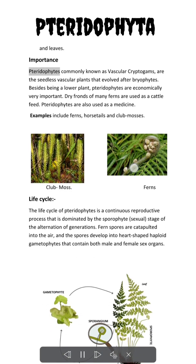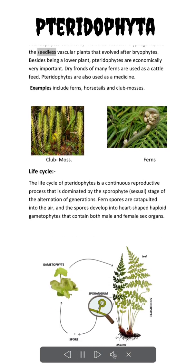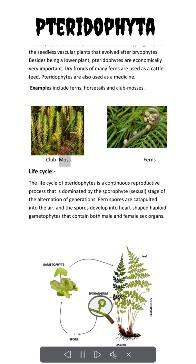Importance: Pteridophytes, commonly known as vascular cryptogams, are the seedless vascular plants that evolved after bryophytes. Besides being a lower plant, pteridophytes are economically very important. Dry fronds of many ferns are used as cattle feed. Pteridophytes are also used as medicine. Examples include ferns, horsetails, and club mosses.